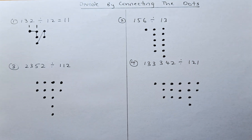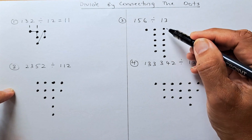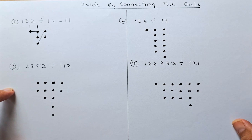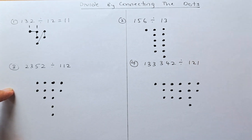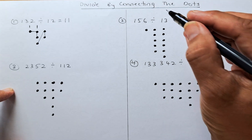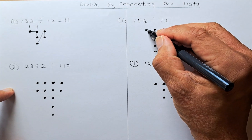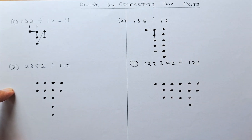Let's do the second example: 156 divided by 13. You have one dot followed by five dots and six dots for 156. You're going to join the first column by one dot and the next column by three dots. First, join one dot to three dots — that's one done.